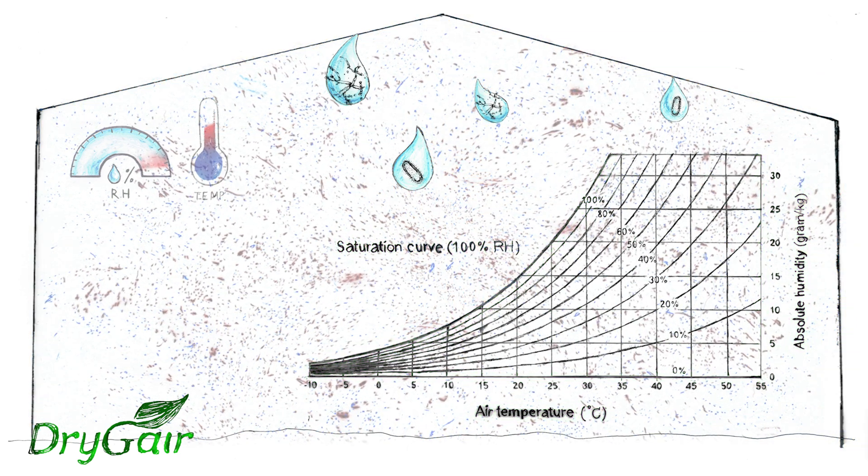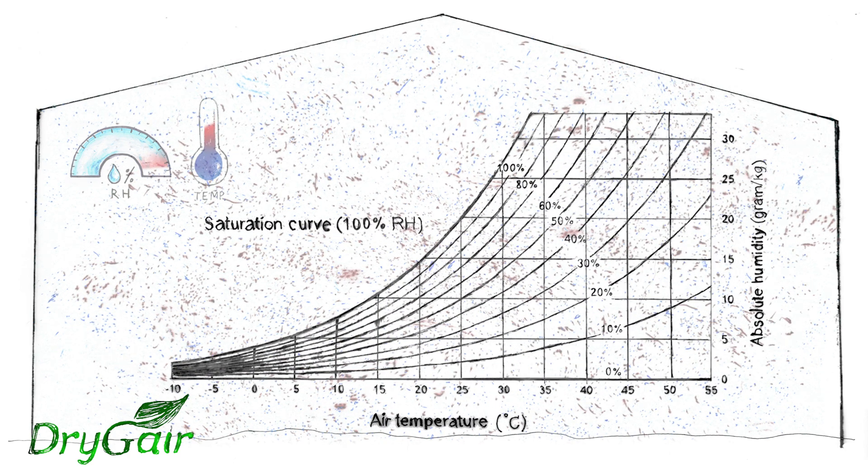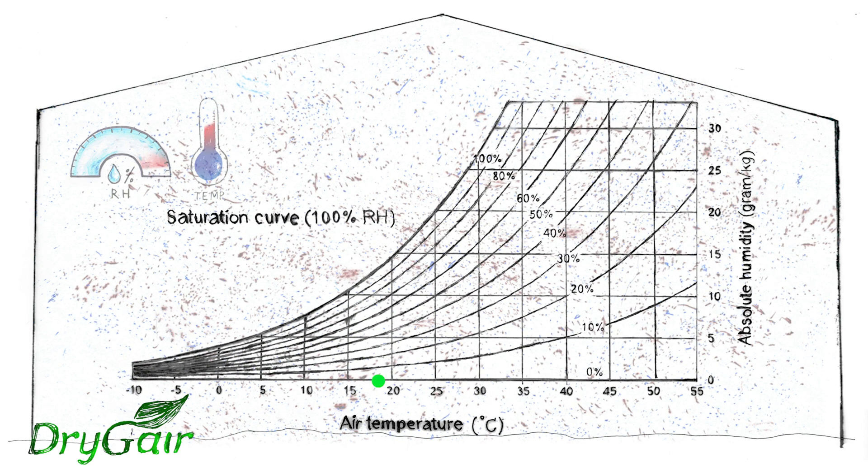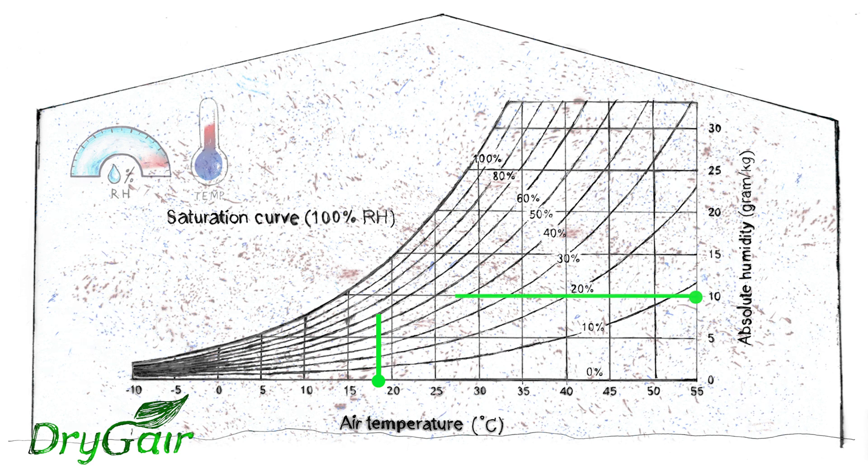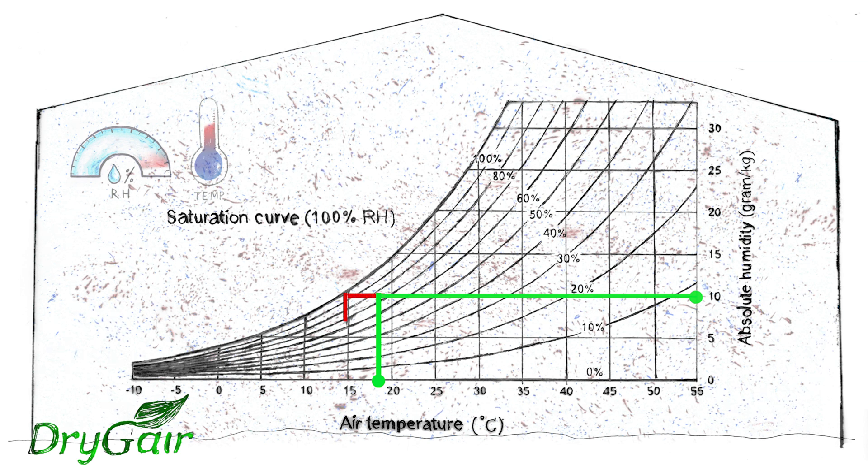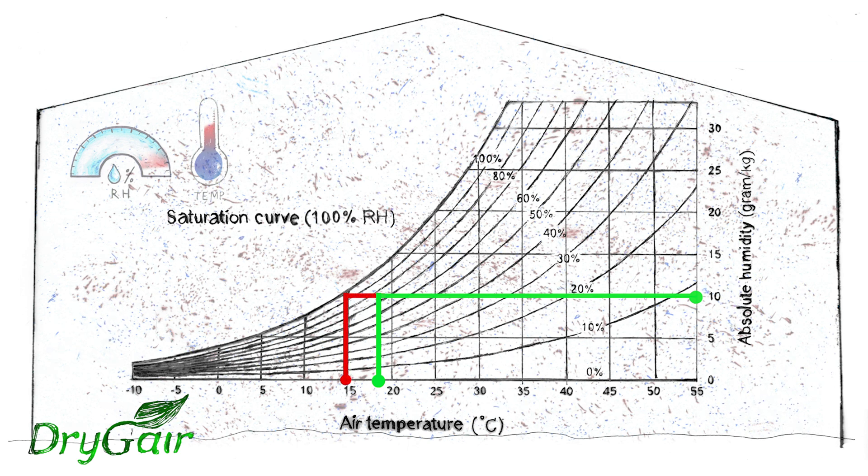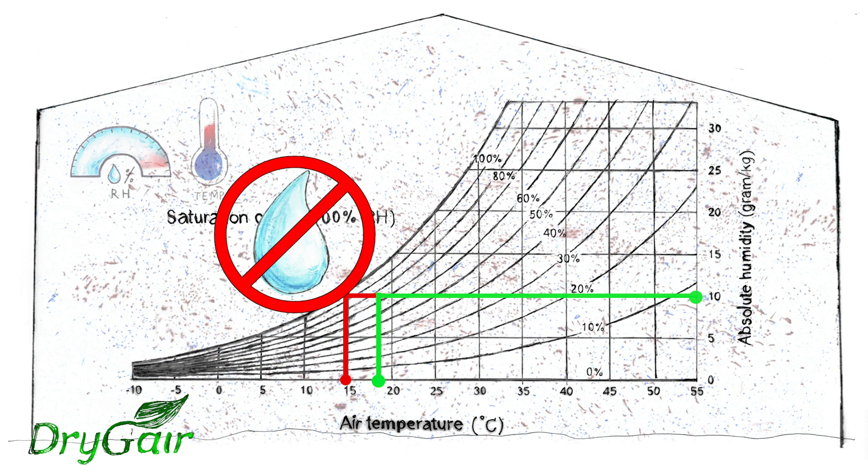Understanding the psychrometric chart helps to avoid the dew point. From any given point of temperature and absolute humidity content, draw a line to the saturation curve. The corresponding temperature underneath will be the dew point. Simply avoid the dew point to prevent humidity-related diseases.